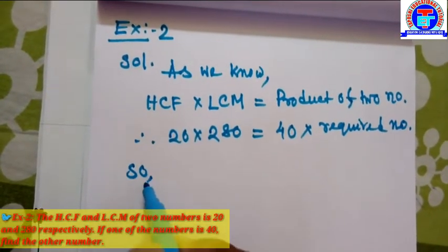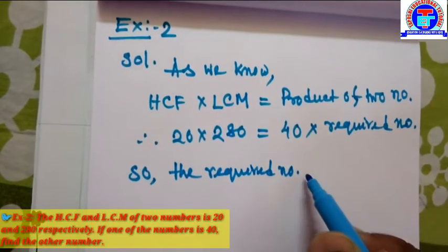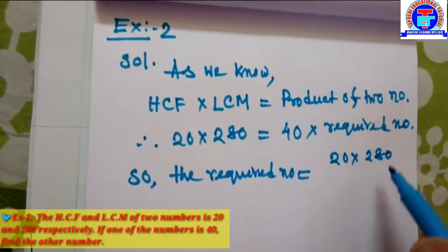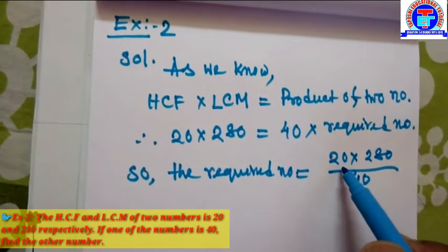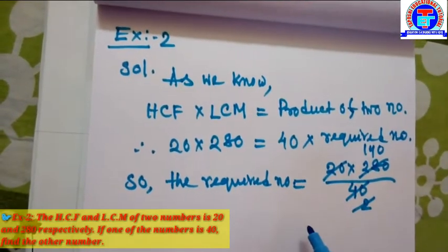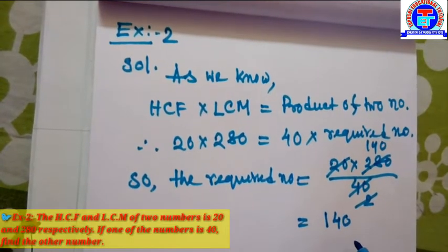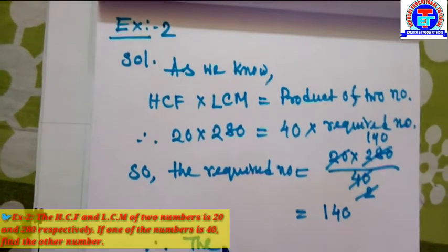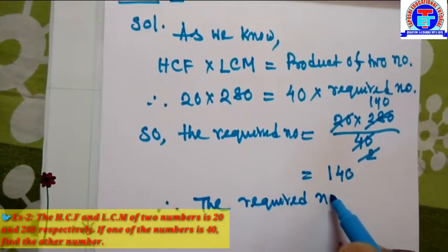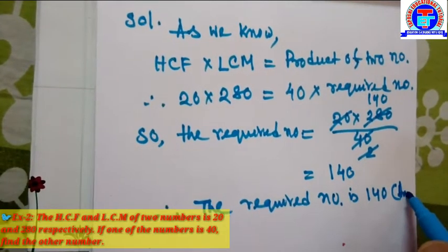So the required number is equal to 20 into 280 divided by 40. Simplifying: 20 divided by 40 gives one half, so we get 140. Therefore the required number is 140. This is the answer to this problem.